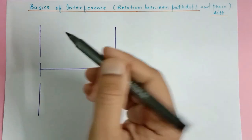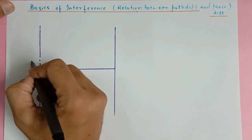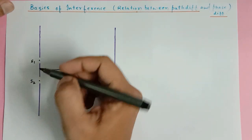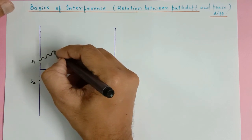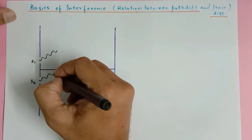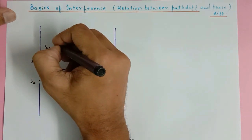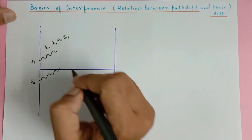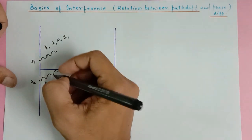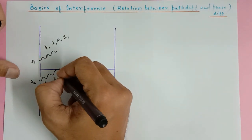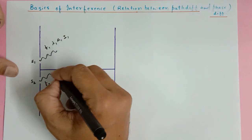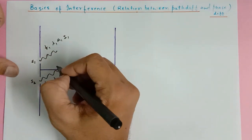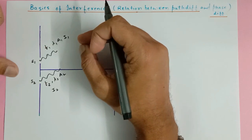Here we have two sources of light, S1 and S2. These S1 and S2 are emitting light. The light which they are emitting has frequency F1, wavelength lambda 1, and the amplitude of this wave is A1, so the intensity is I1. Similarly, the second wave has frequency F2, wavelength lambda 2, amplitude A2, and intensity I2. The waves from S1 and S2 are going to superpose with one another on the screen.